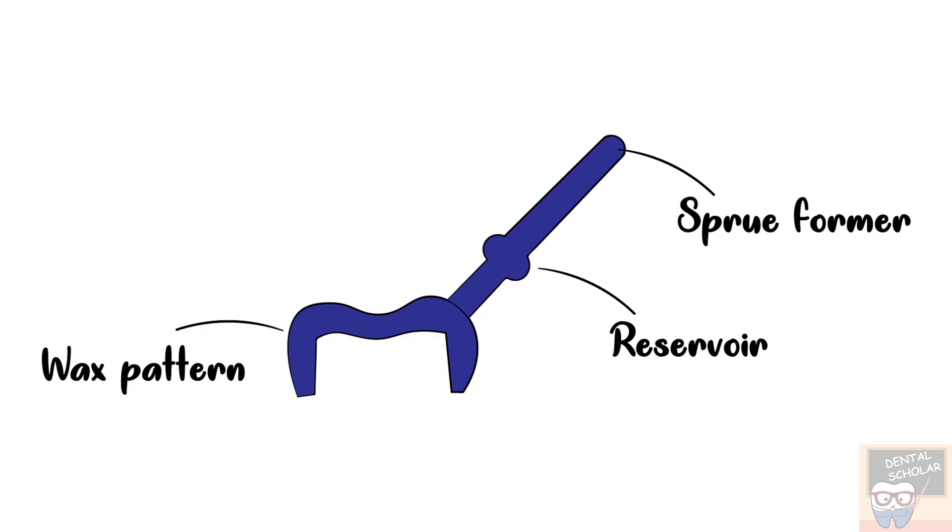So what happens is when the metal solidifies it contracts, and because of this contraction or shrinkage, porosity will be created at the last point of solidification which is the junction of sprue and the crown. So to prevent that, reservoir is used.